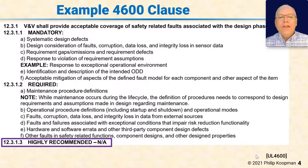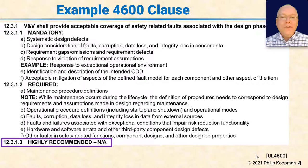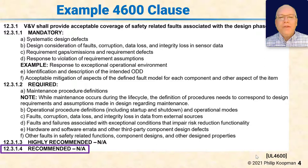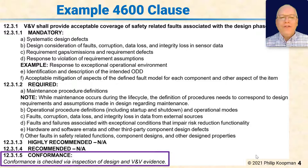Section 12.3.1.3 is highly recommended — in this case there aren't any; it's a placeholder for future versions. Highly recommended are things you really ought to seriously consider, but if you decide it doesn't apply, that's okay. Subsection 4 is recommended — even less stringent; just good ideas that don't need to be addressed in your safety case. Finally, every clause has a conformance section, which is how the assessor checks conformance — in this case, inspection of design and VNV evidence. The standard aims to be as concrete as possible in how to assess conformance.